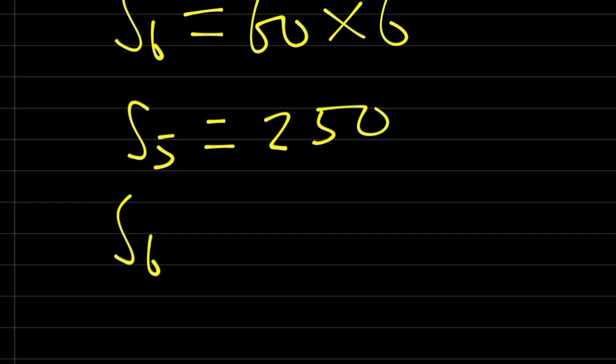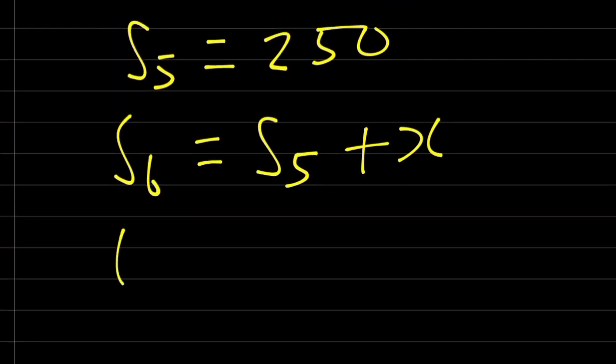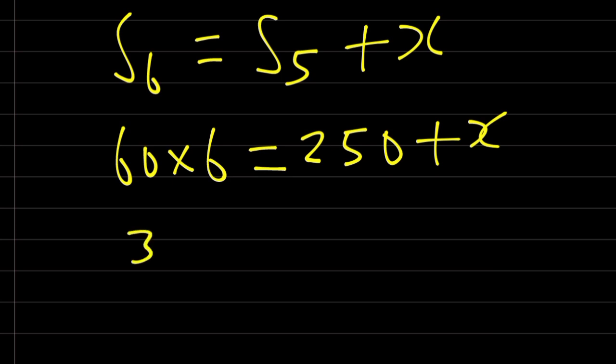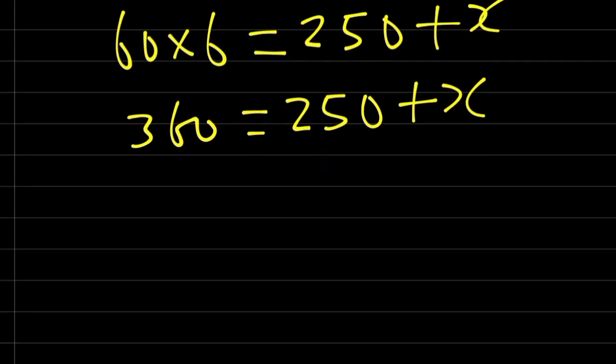Therefore, sum of the six numbers will be equal to the sum of the five numbers plus x. x is the last number that we want to find. So, 60 times 6 is equal to 250 plus x. 60 times 6 is 360, which equals 250 plus x. Therefore, x is equal to 360 minus 250.